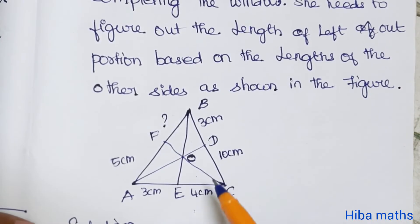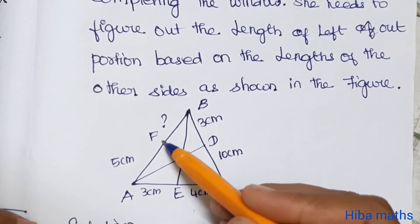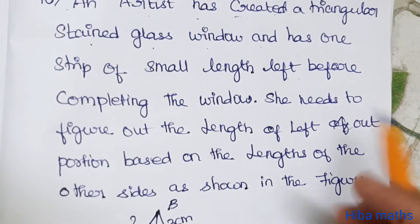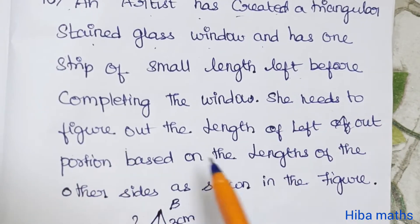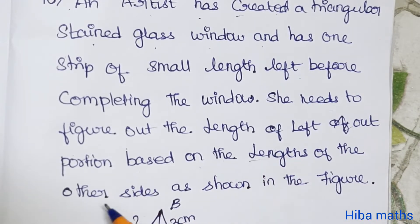So in the diagram, the triangular window will be made with one strip. She needs to figure out the length of the left out portion based on the length of the other sides.